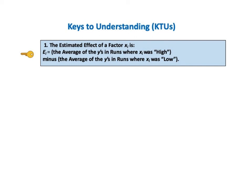The first key to understanding says, The estimated effect of a factor X sub i is E sub i, which is the average of the y's in runs where X sub i was high, minus the average of the y's in runs where X sub i was low.